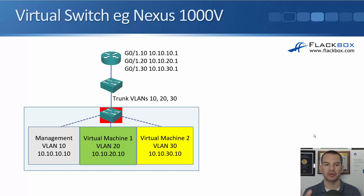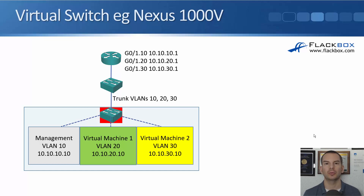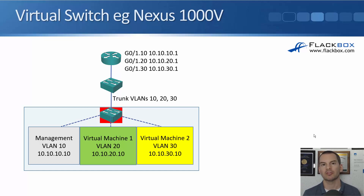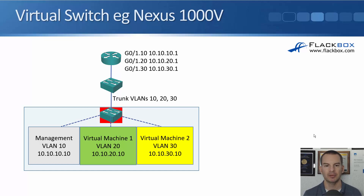The virtual switch highlighted in red runs in software. In VMware, they use their own native software for that. There was also support for Cisco's Nexus 1000v, a software switch you install in your VMware environment to replace the native switch. The Nexus 1000v is still supported in Microsoft Hyper-V, but support has ended in VMware.